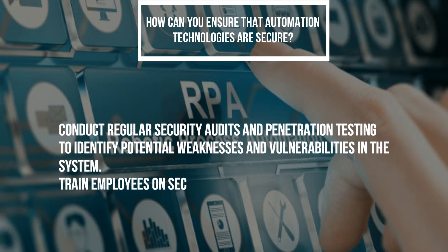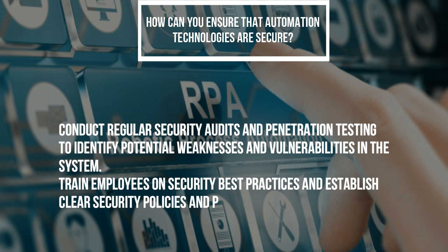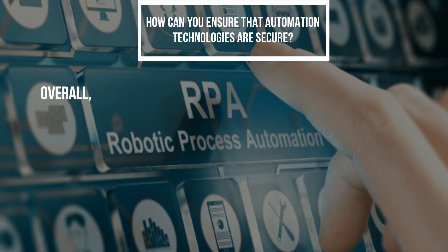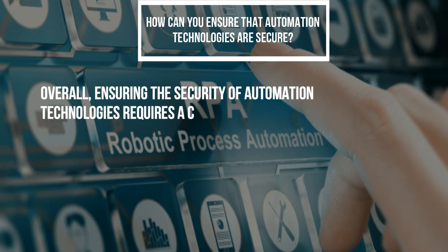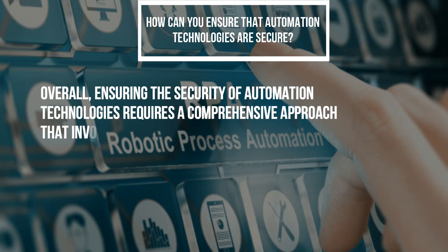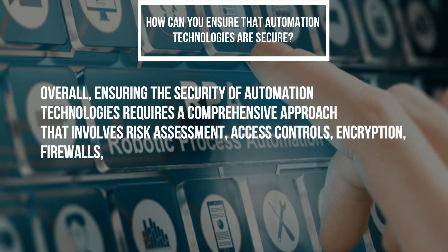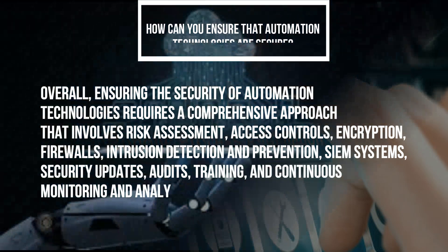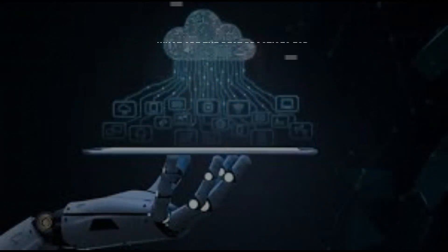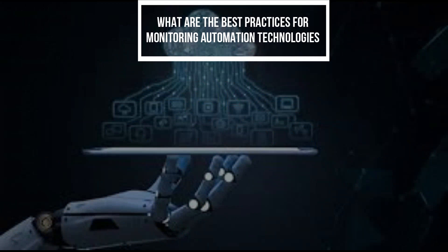Train employees on security best practices and establish clear security policies and procedures. Overall, ensuring the security of automation technologies requires a comprehensive approach that involves risk assessment, access controls, encryption, firewalls, intrusion detection and prevention, SIEM systems, security updates, audits, training, and continuous monitoring and analysis.